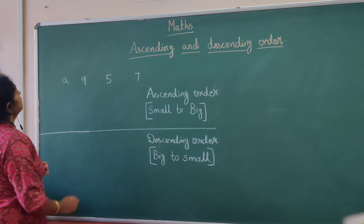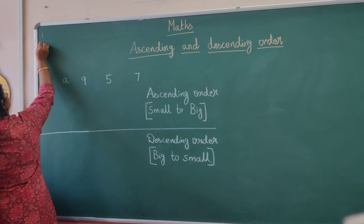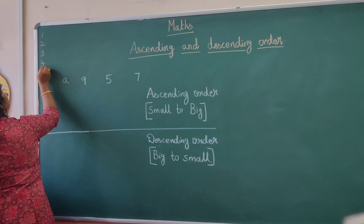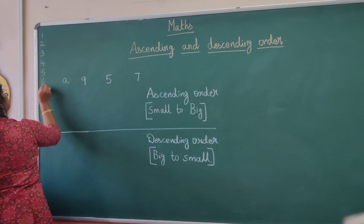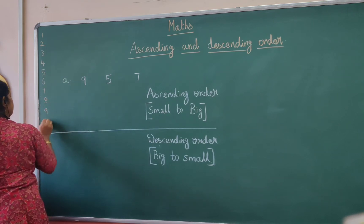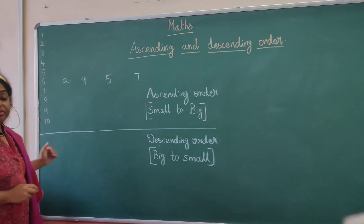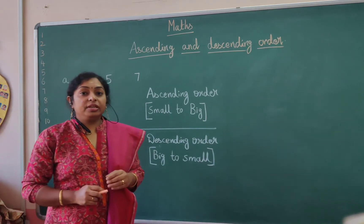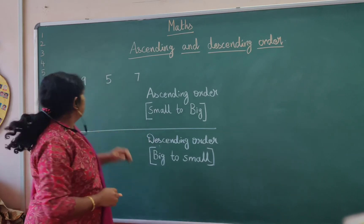Come on, let's do this. For reference, we do the sequence 1, 2, 3, 4, 5, 6, 7, 8, 9, 10. Once you have this reference, it is very easy for you to arrange numbers in ascending as well as in descending order.